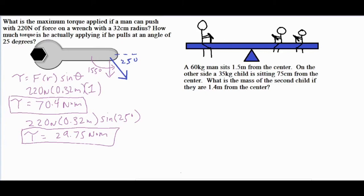Now for our second question we have a man who's sitting 1.5 meters from the center, and on the other side a 35 kilogram child is sitting 75 centimeters from the center. What is the mass of the second child if they are 1.4 meters from the center?